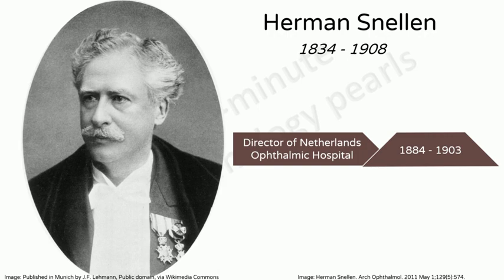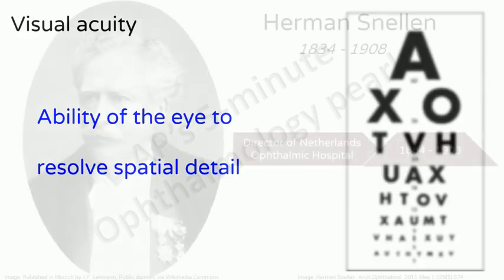Snellen, a Dutch ophthalmologist, succeeded Donders as director of Netherlands Ophthalmic Hospital. He also improved upon and invented a number of surgical procedures, including those for entropion, ectropion and trichiasis, but is best known for the chart that bears his name.